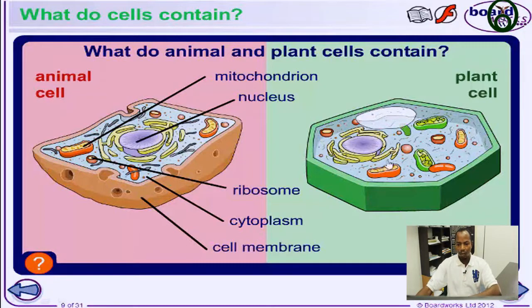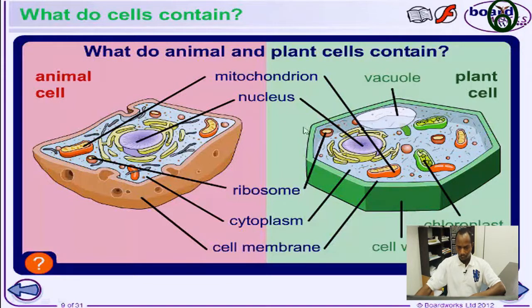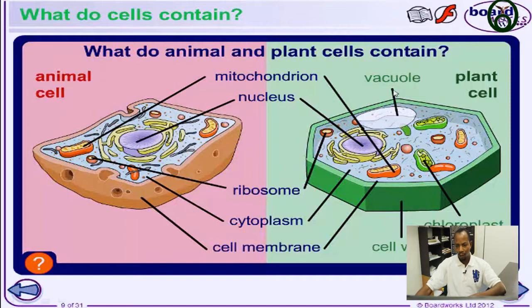Now let's take a look at plant cells — what they have in common with animal cells and what they have that animal cells don't. Plant cells also have mitochondria, nucleus, ribosome, cytoplasm, and cell membrane. But they additionally have a vacuole, chloroplasts, and a cell wall.